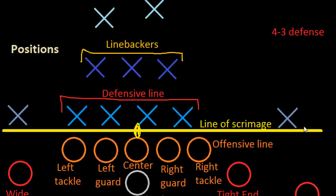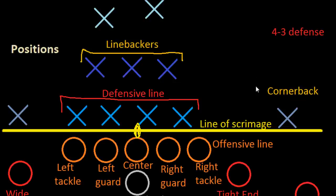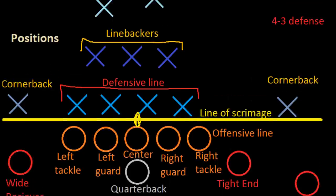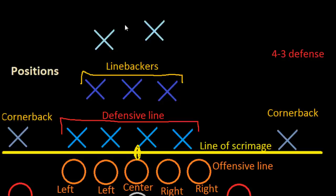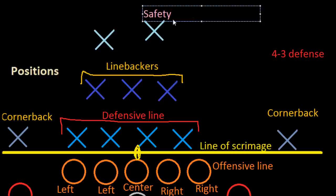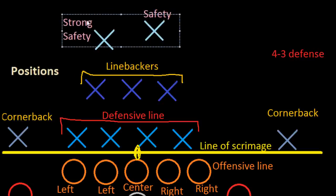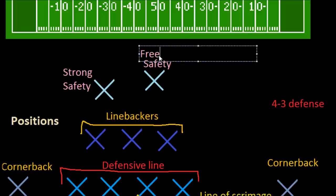On both sides, usually defending against the wide receivers, we have the cornerbacks — one on each side, not to be confused with the quarterback. And then the two guys further back are the safeties. Sometimes you'll have what is called a strong safety, and the other is known as a free safety.